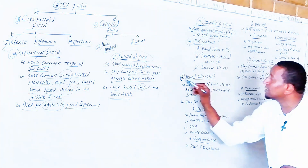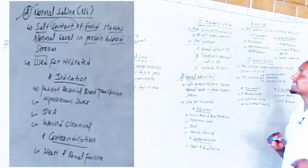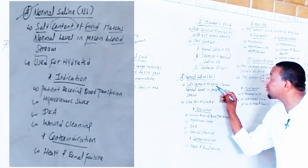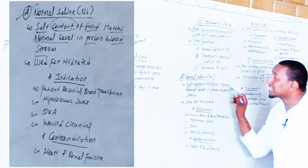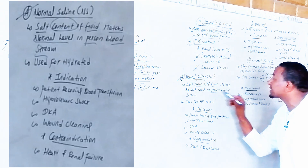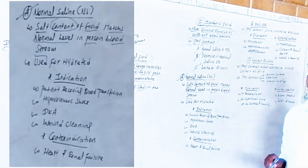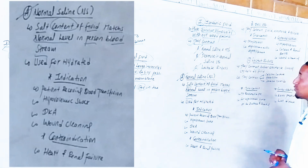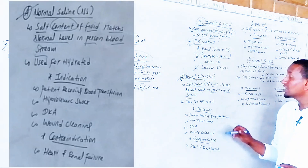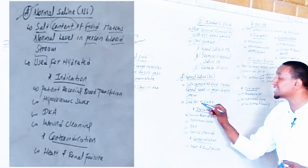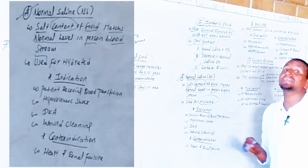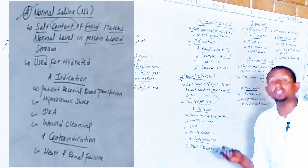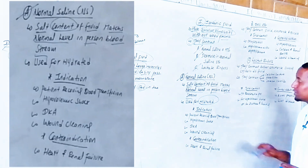Normal saline 0.9% is a salt-containing fluid that matches the normal level of a person's bloodstream. Normal saline is used for hydration and replacement of lost fluid, secondary to bleeding, diarrhea, and vomiting.